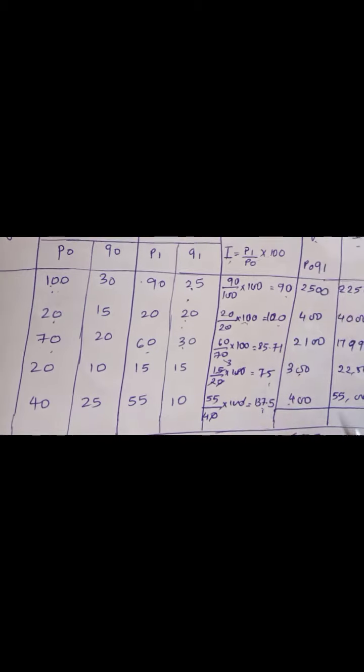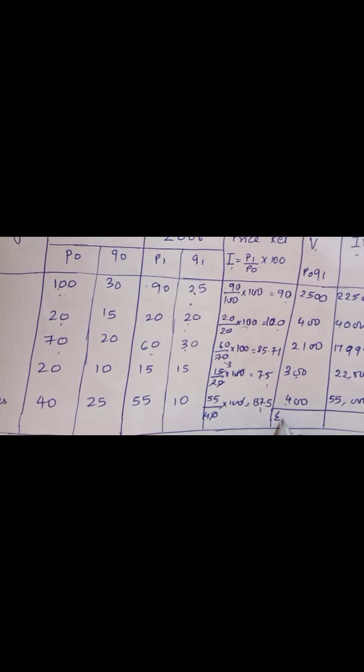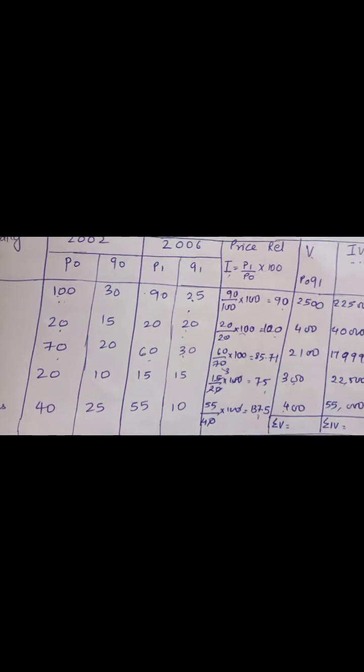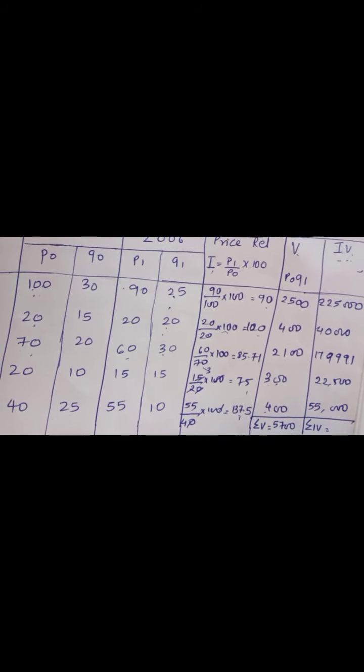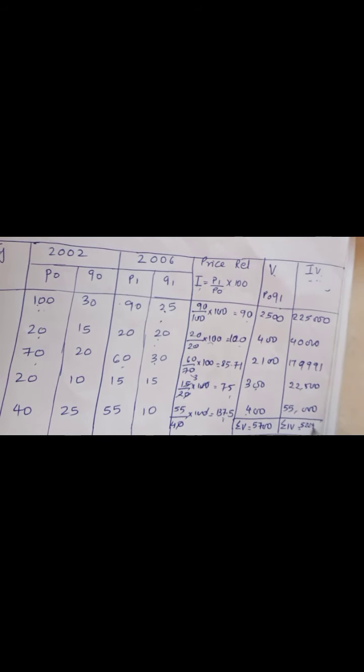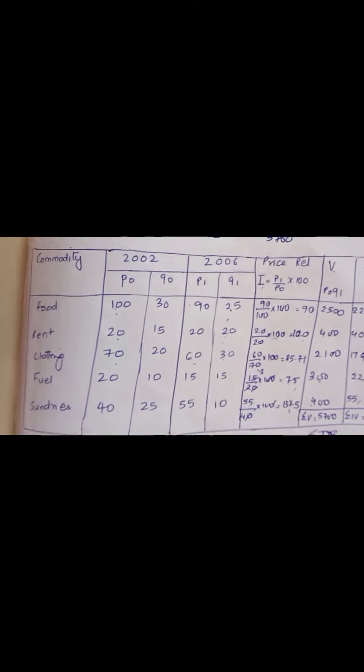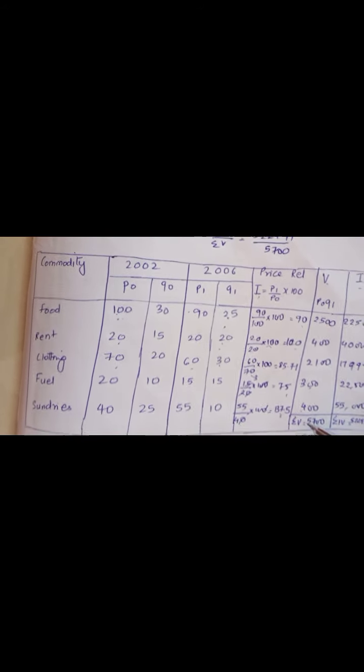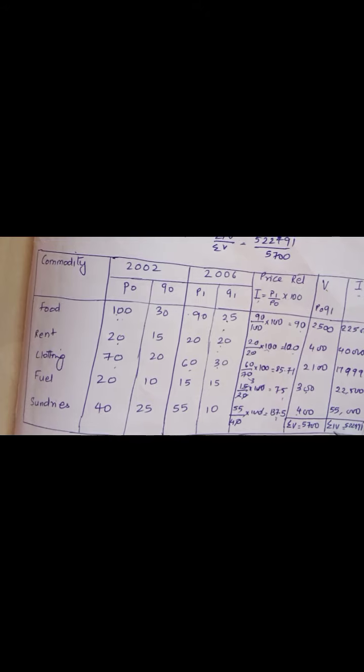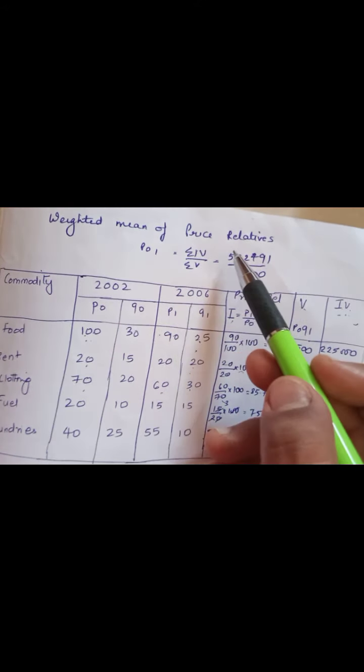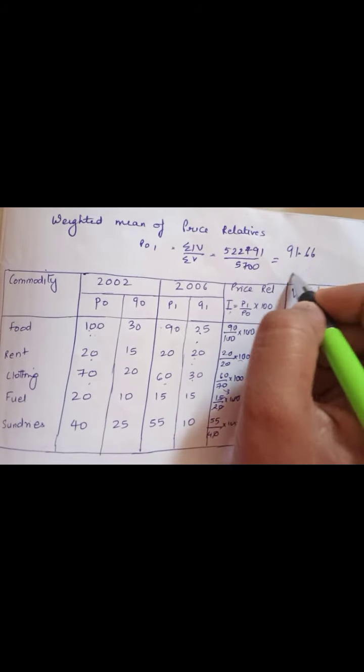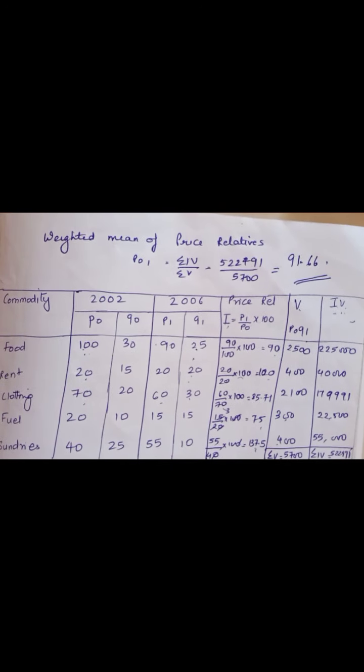So we have to find summation of V as well as summation of iV. For summation of V we get 5700, and summation of iV we get 522,491. This is how we got summation of V and summation of iV. Basically, to find the weighted mean of price relative, we are going to divide them up. That is summation of iV divided by summation of V equals 91.66. This is how you need to find the weighted mean of price relative.